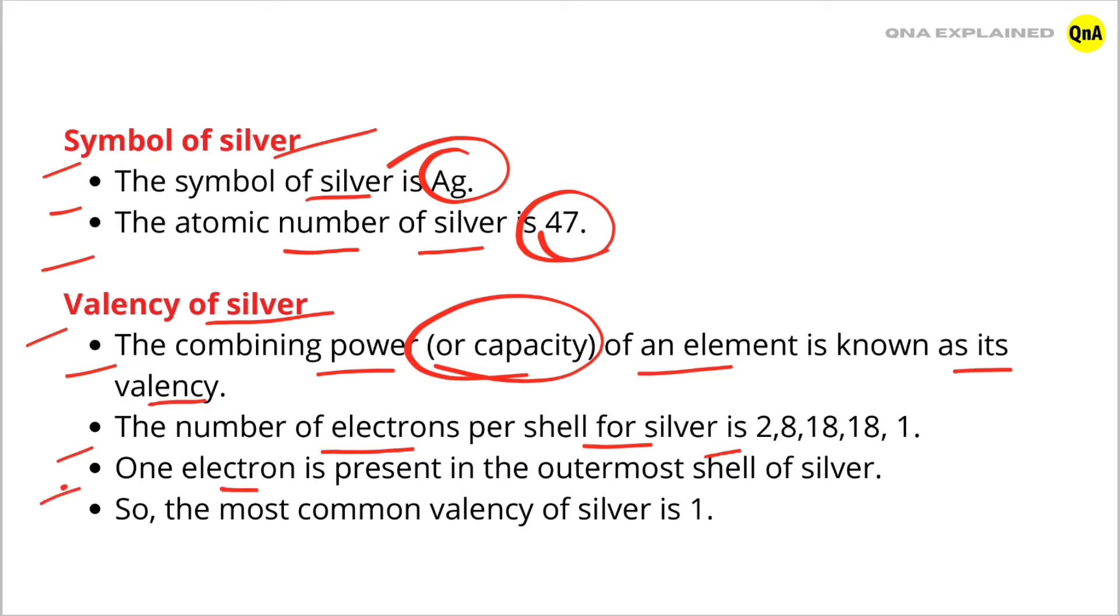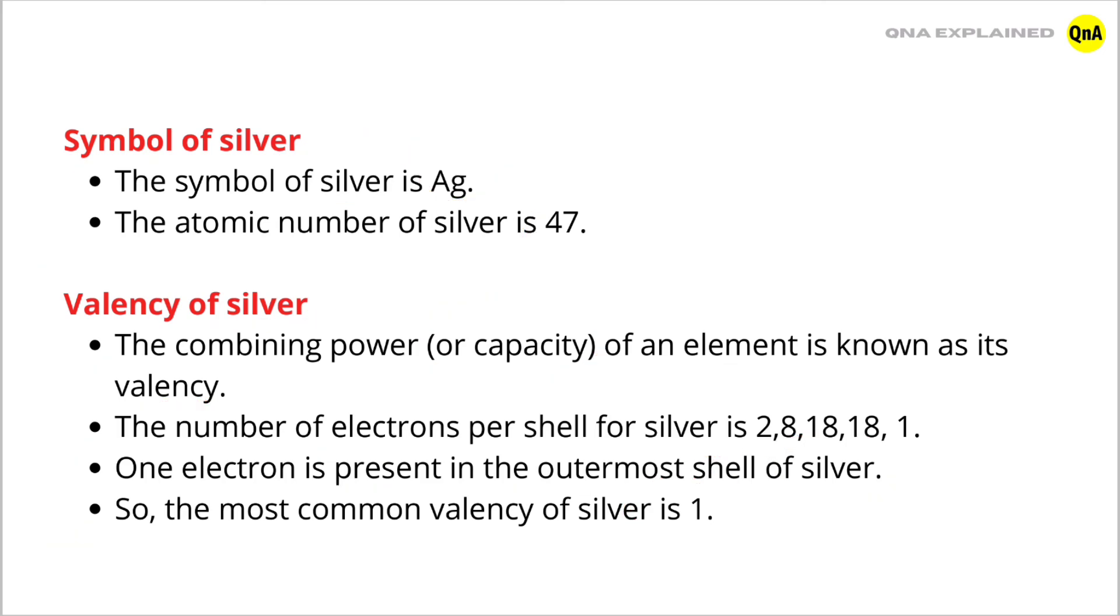One electron is present in the outermost shell of silver. So, the most common valency of silver is 1. The answer is the valency of silver is 1.